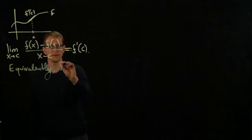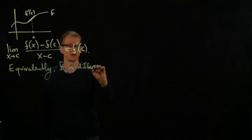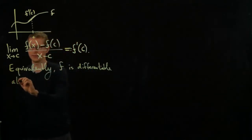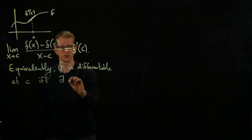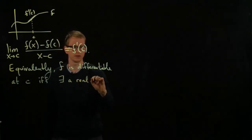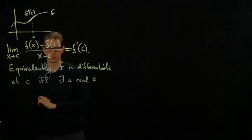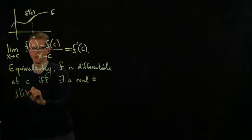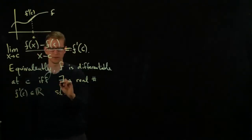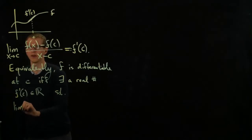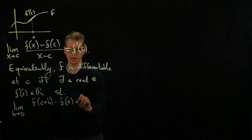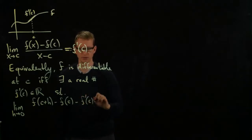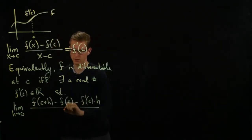Equivalently, f is differentiable at c if and only if there exists a real number, which we denote by f prime c. We're interpreting this as just an ordinary number such that the limit as h approaches 0 of the expression f(c+h) minus f(c) minus f'(c) times h, divided by h, equals 0.